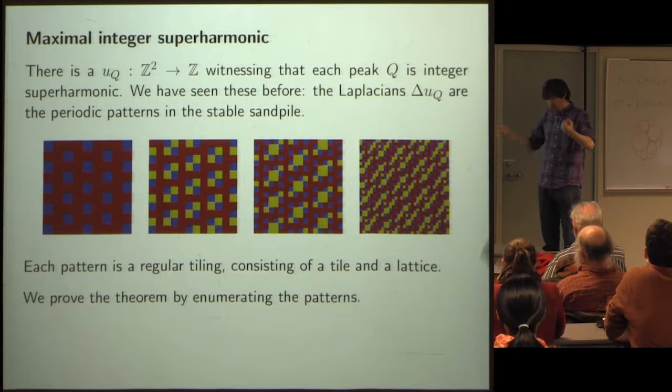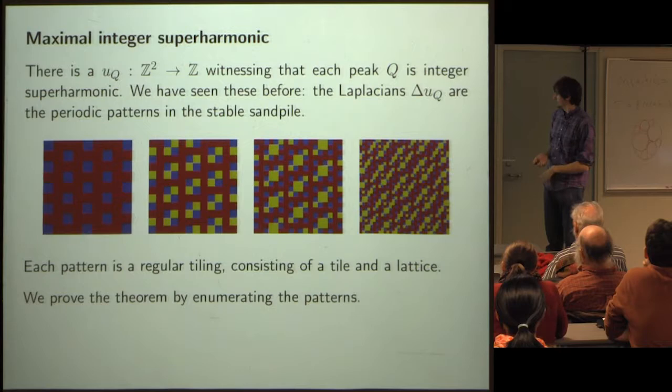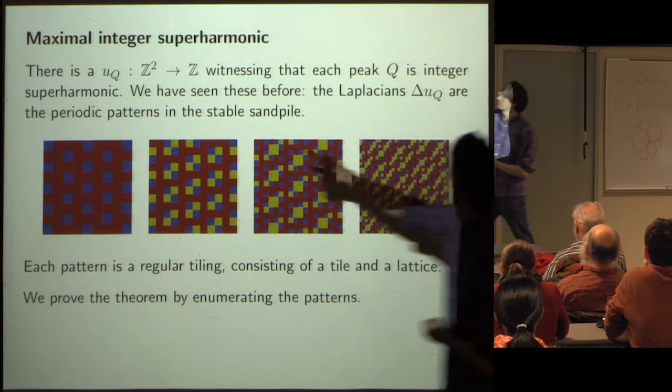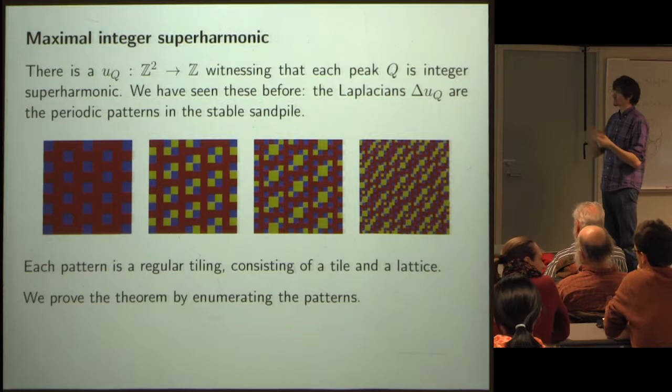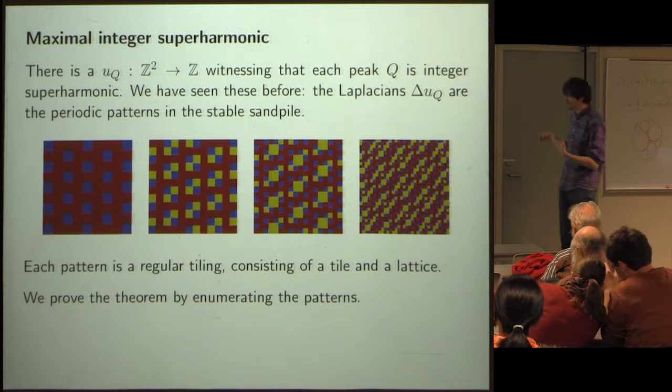This is how we prove the theorem: we wrote down a long induction proof where the induction hypothesis is very involved. The induction constructs all these patterns, generating one of these witness functions u for every peak in the Apollonian circle packing, and guarantees that these peaks are maximal — their growths can't be improved. These two things together prove the theorem.